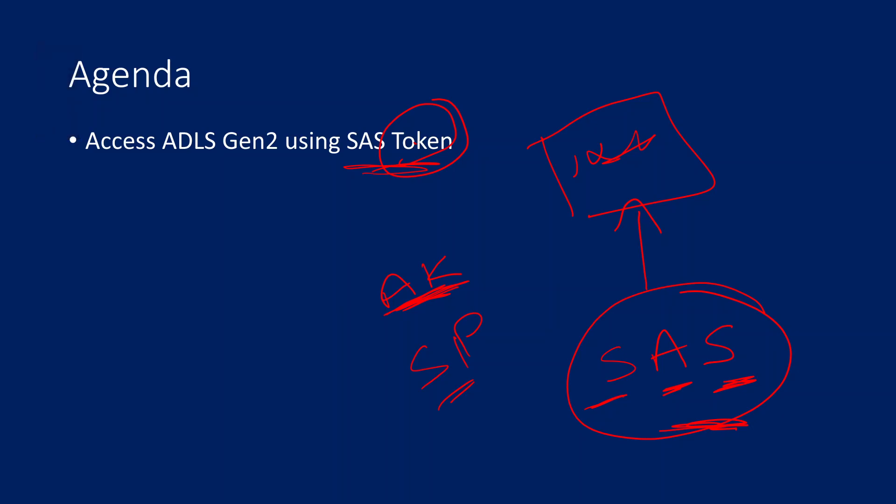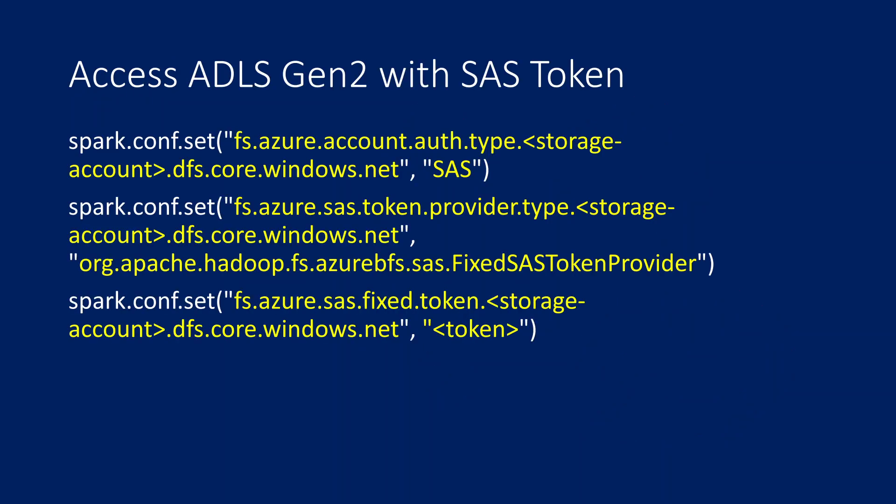For now, imagine a SAS token as a key given to you to access storage and data for a limited period of time. If you want to access the storage account data using a SAS token, you have to set all these configurations on the Spark cluster using this code.